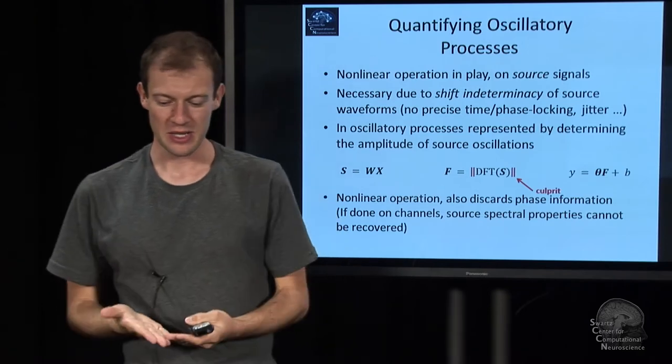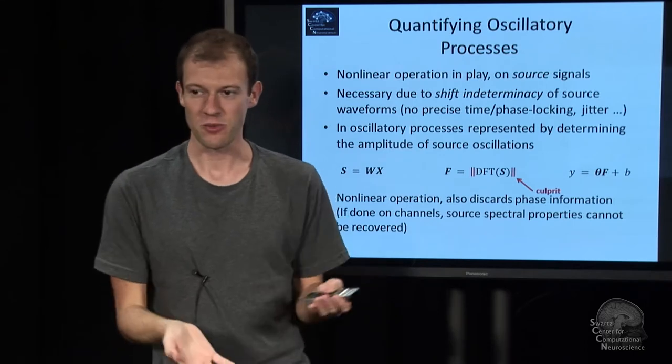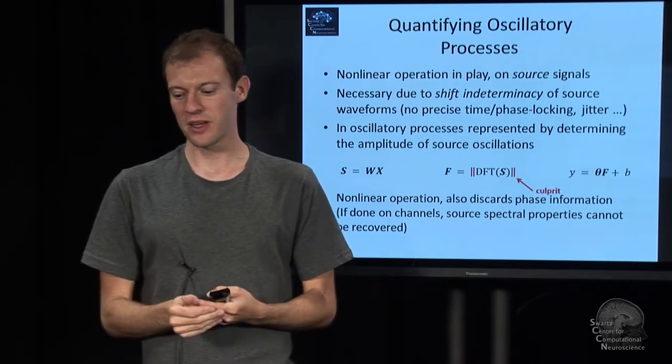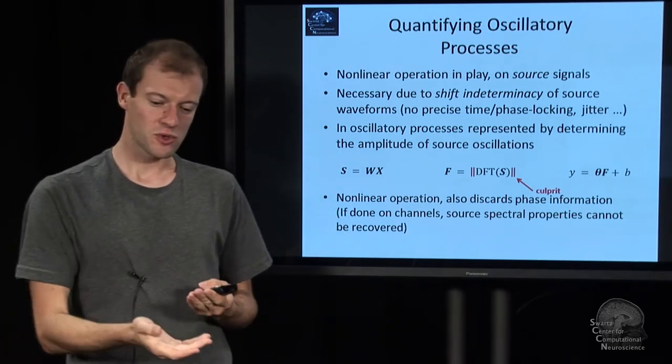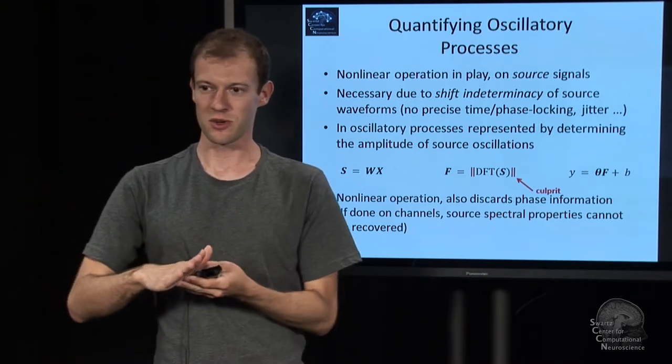And the reason why it needs to be that way is if you calculated the magnitude already on the channels and threw away the phase information, you couldn't then map and reconstruct the source spectral properties anymore.